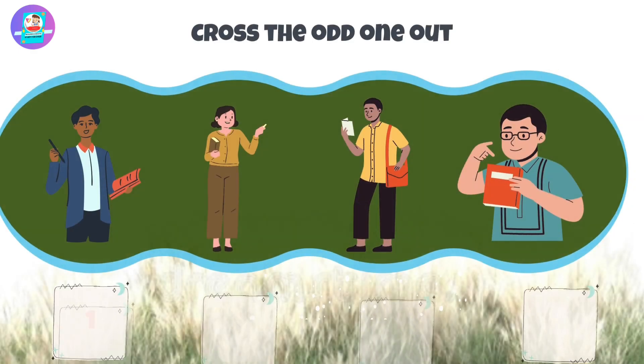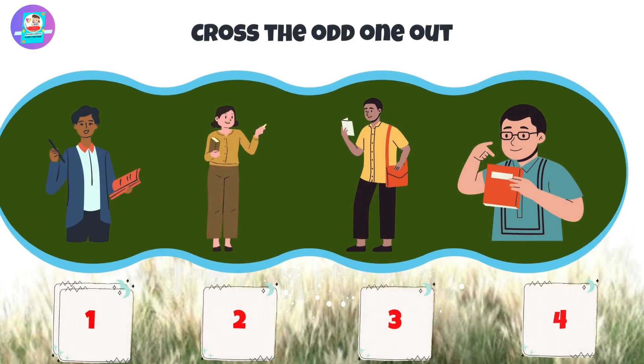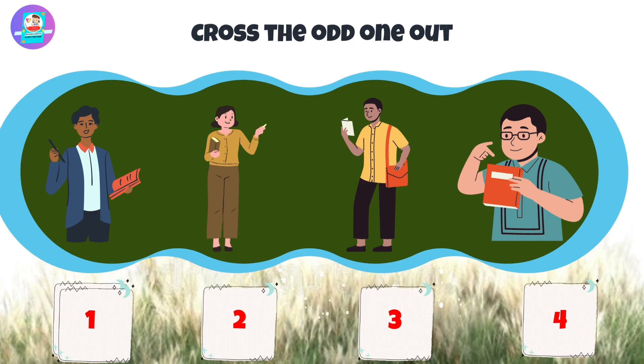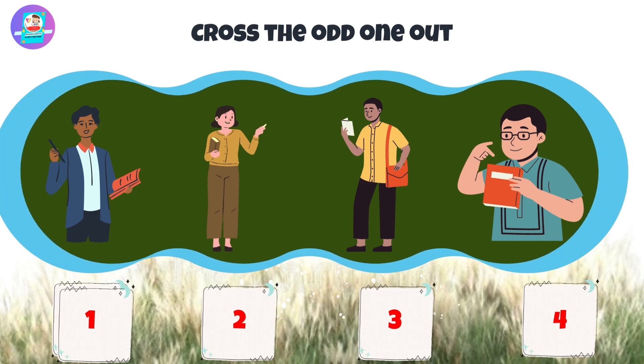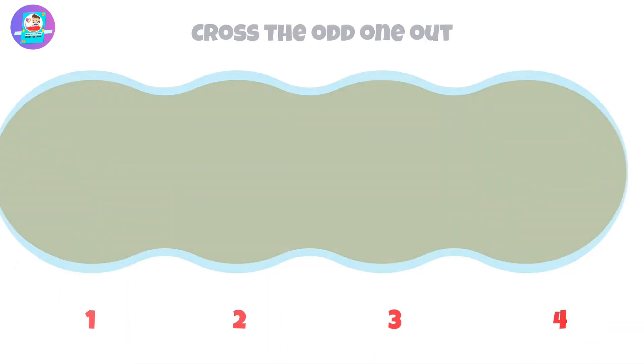Okay, next, there are 4 pictures: 1, 2, 3, 4. Put the odd one out.